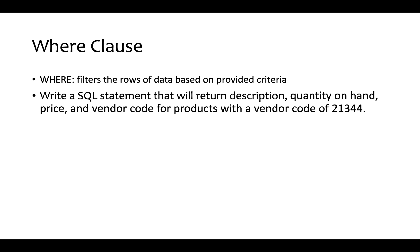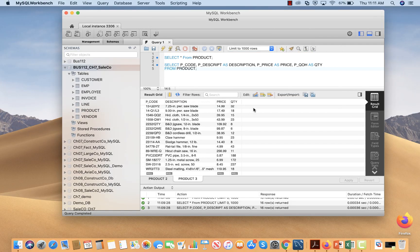Now I'm going to introduce you to the WHERE clause. The WHERE clause filters the rows of data based on some particular criteria. For example, write a SQL statement that will return description, quantity on hand, price, and vendor code for products with a vendor code of 21344. Let me go to SQL Workbench.